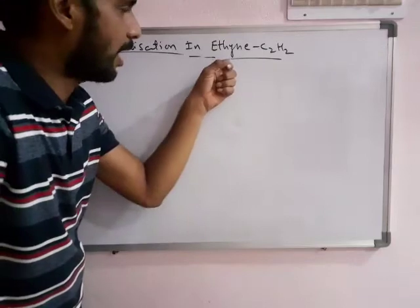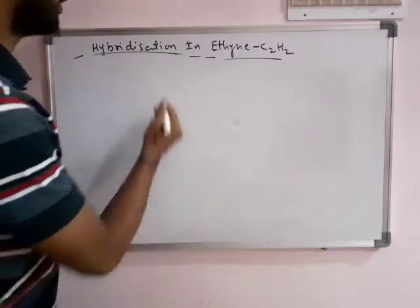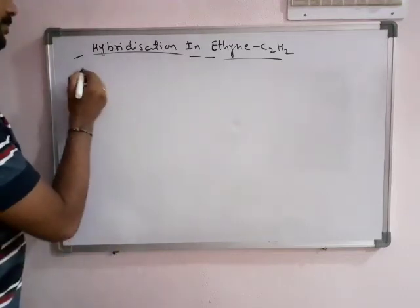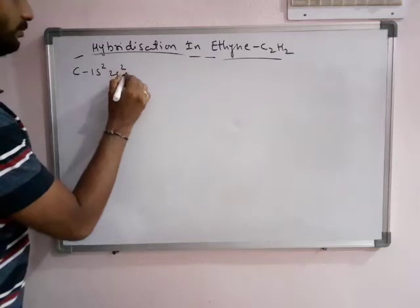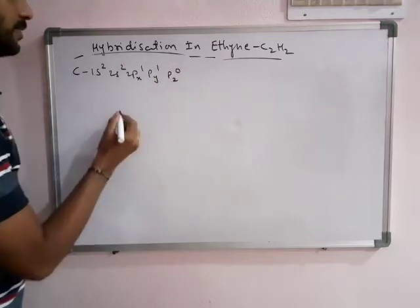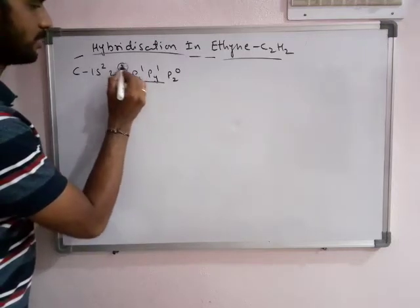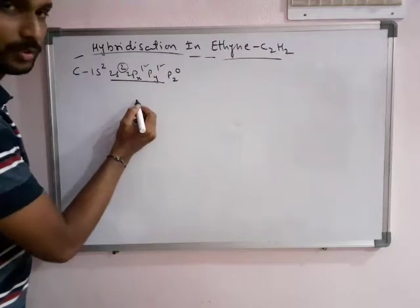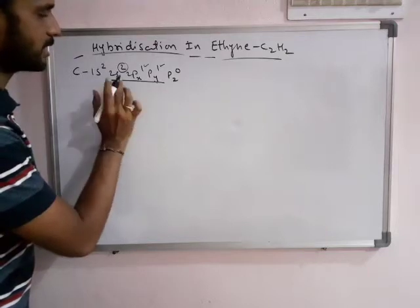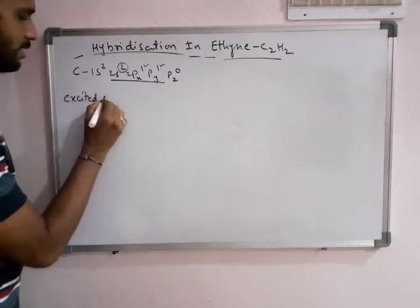Now we see the hybridization in ethyne, also known as acetylene. We see the hybridization of the carbon atoms in each carbon. So we have the carbon electronic configuration. Carbon has a lone pair and two unpaired electrons. So carbon must possess four bonds. To get four bonds, there must be four unpaired electrons, so carbon always undergoes the excited state.